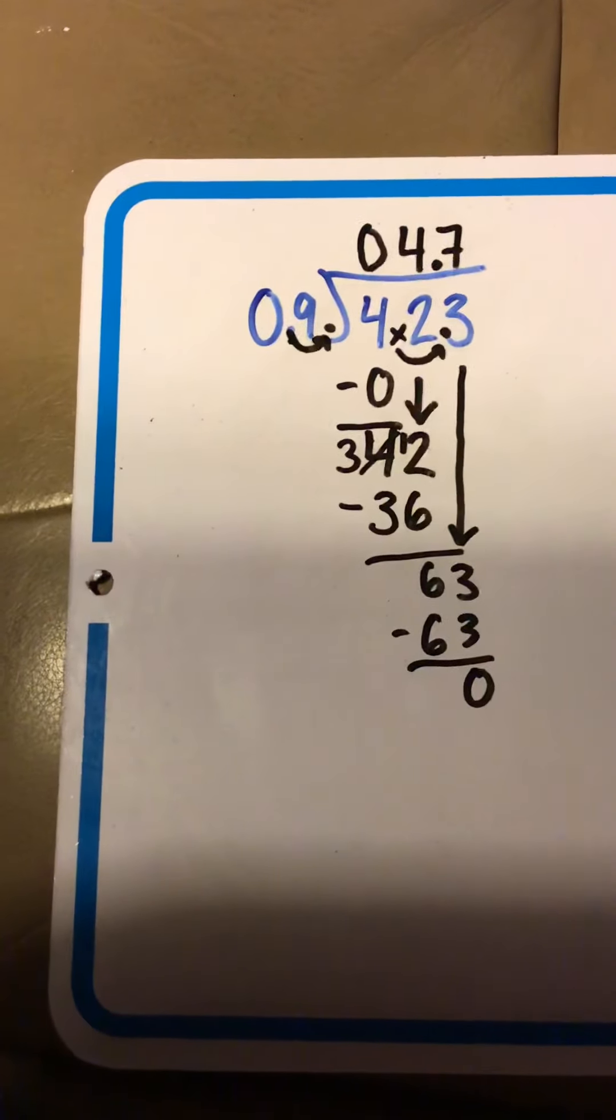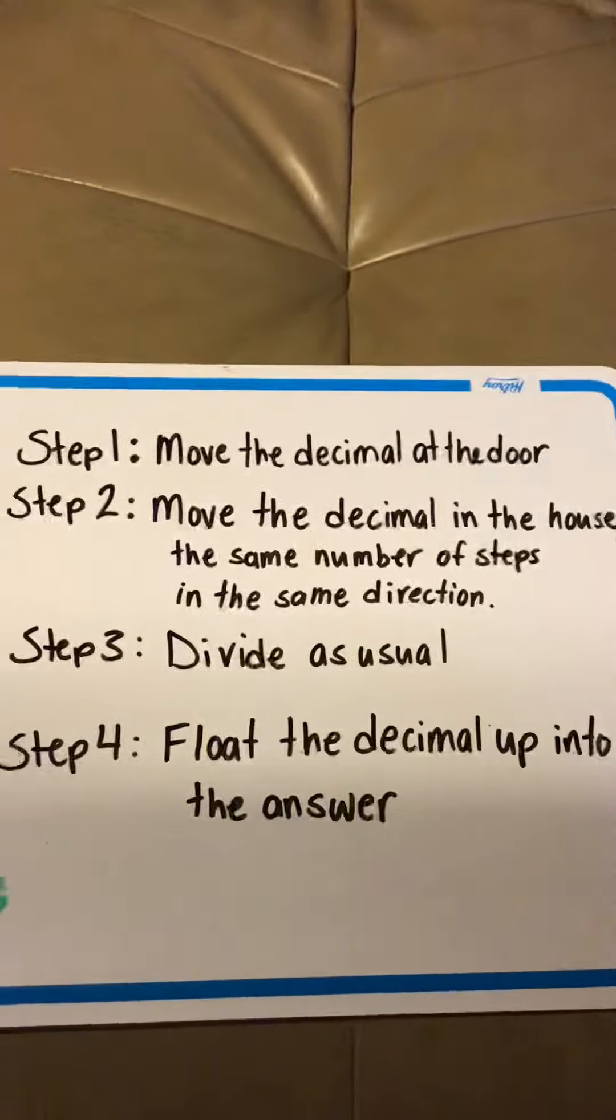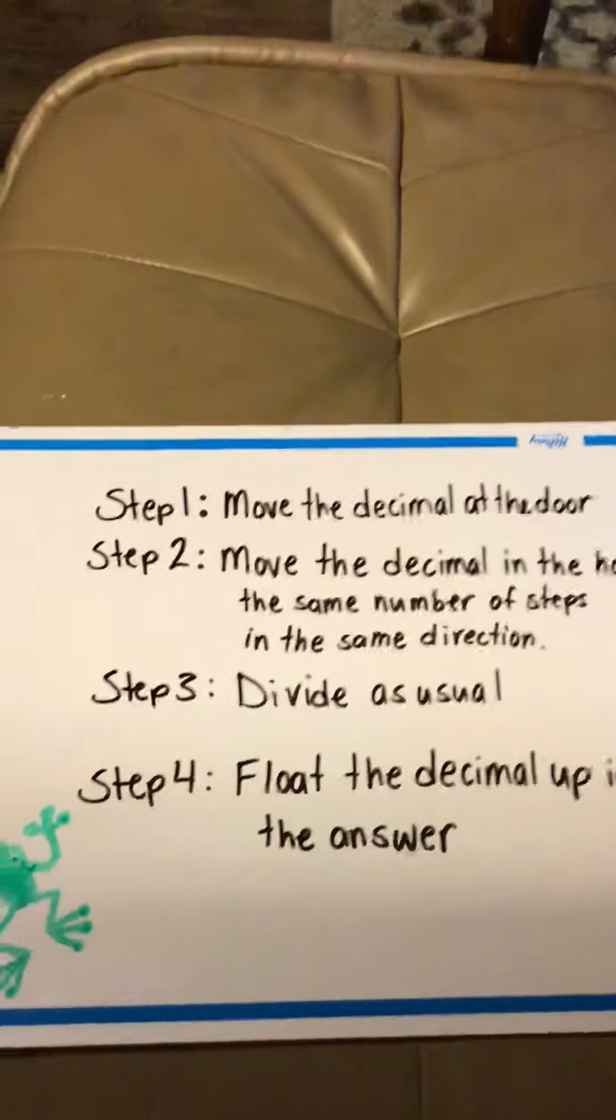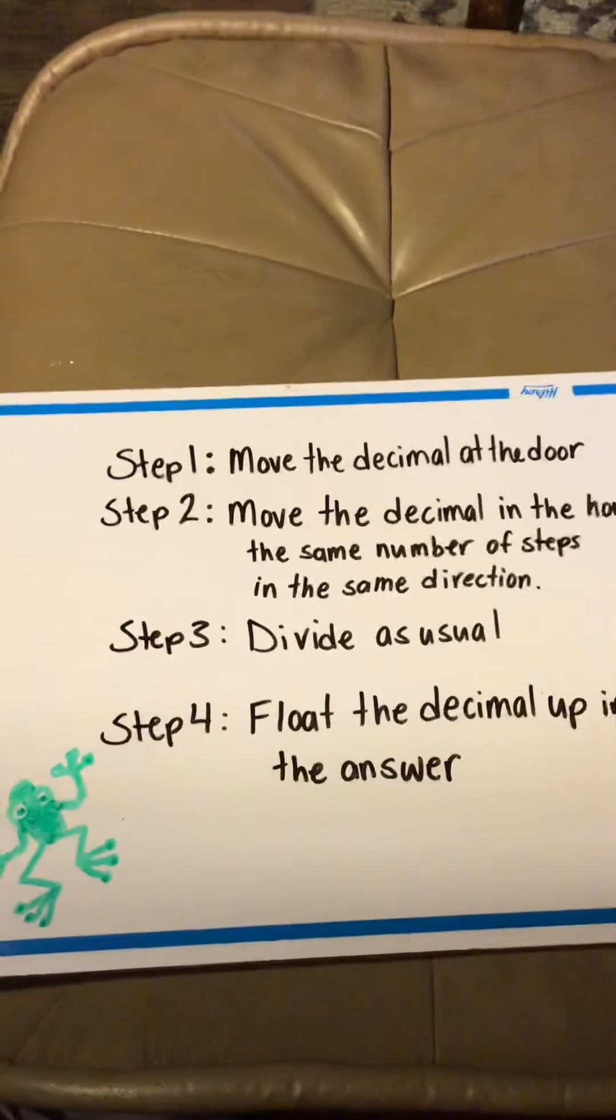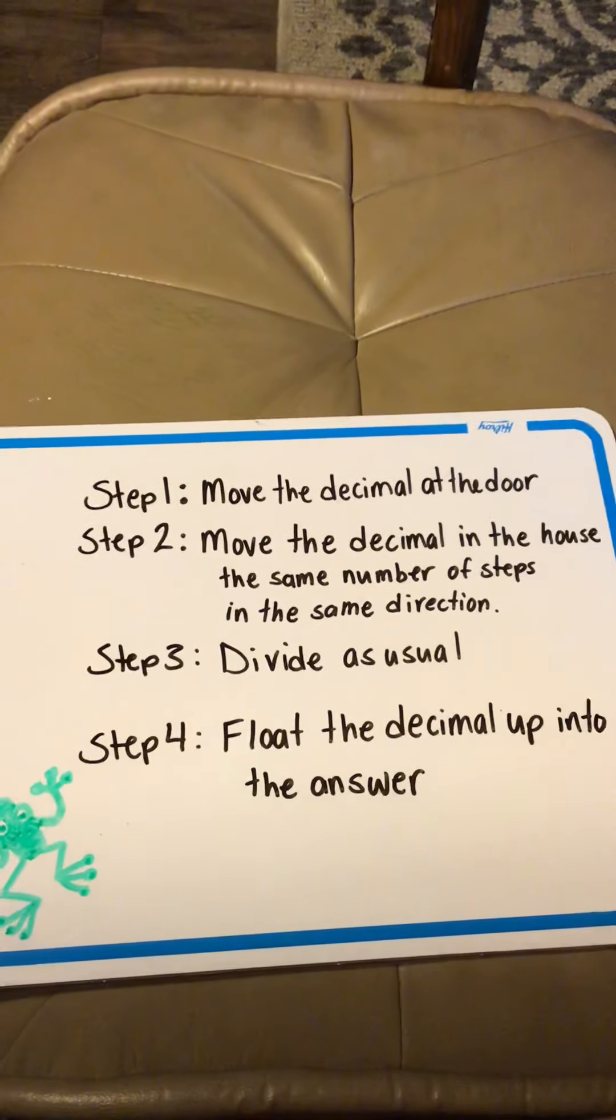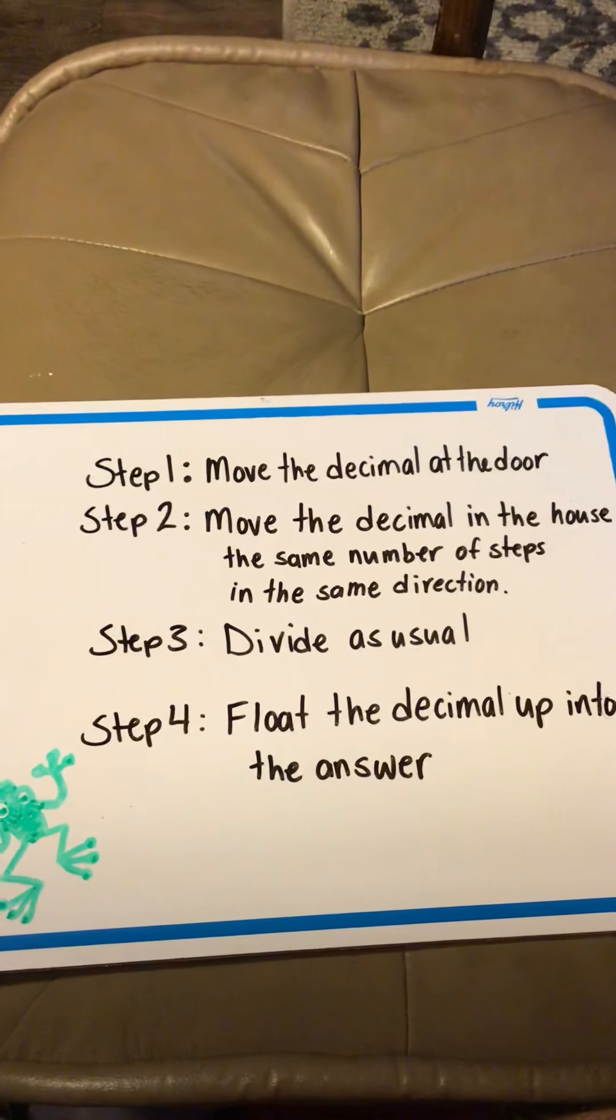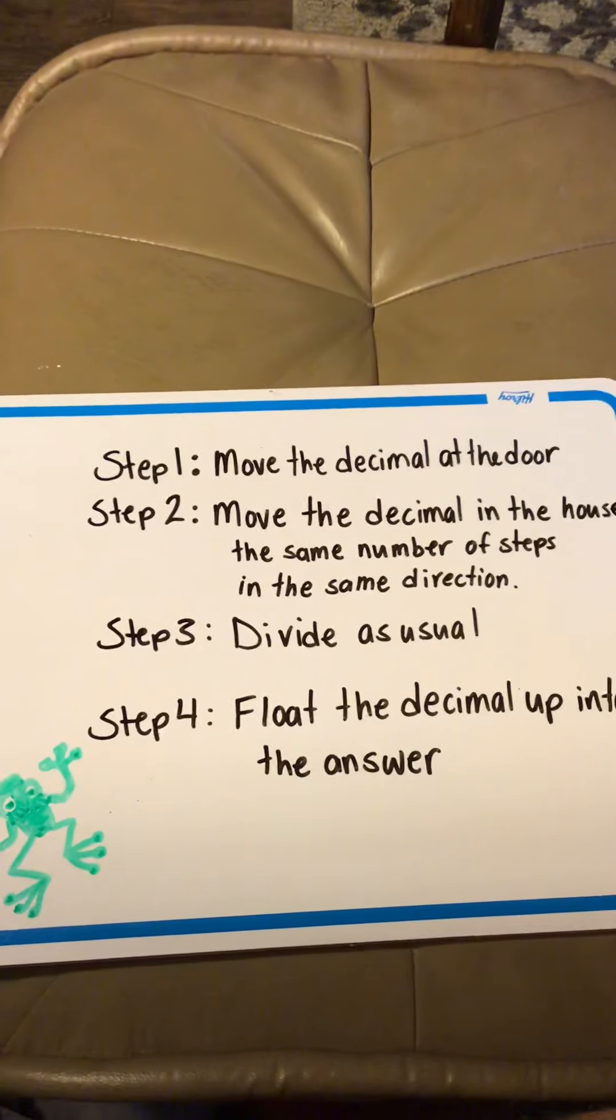So, there are some rules for us to follow when there is a decimal at the door. Step 1. We're going to move the decimal at the door to the right, so we can get rid of it. Step 2. We're going to move the decimal in the house, the same number of steps, and in the same direction.